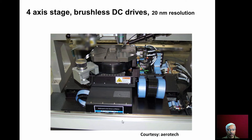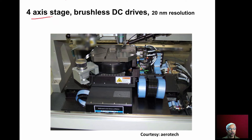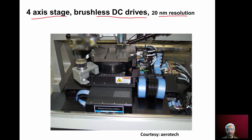Here you can see a nano stage with 4 axes — x-axis, y-axis, z-axis (3 linear axes) and a 4th rotary axis. It runs with brushless DC drives and has a resolution of 20 nanometers. Such fine stages are available in the market.